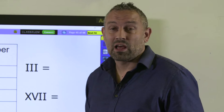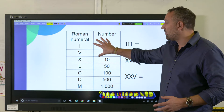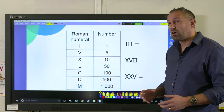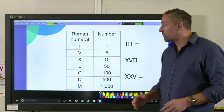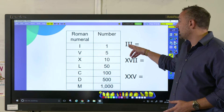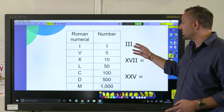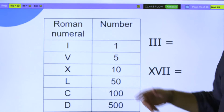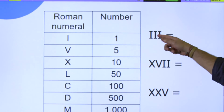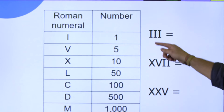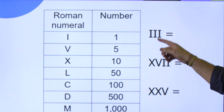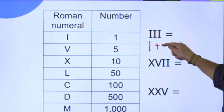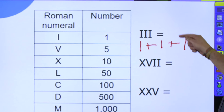This is a resource that I would have in their books, and I would have this printed out, maybe on your working wall or in their book, so they've got it to hand. The way that Roman numerals work is that they're quite literal and they follow on from each other. The Roman numeral I represents one, so here you have I, I, I — one add one add one — which equals three.